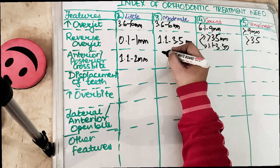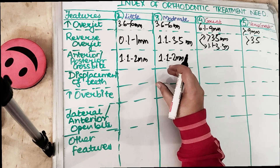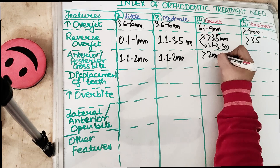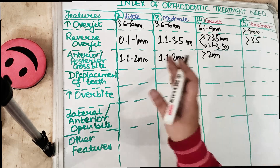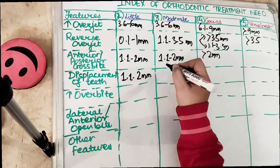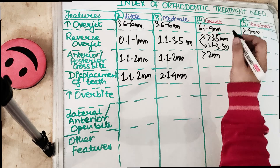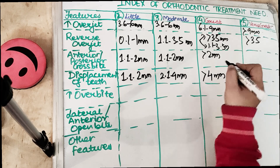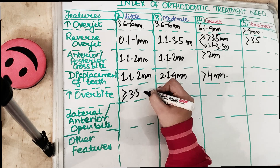For anterior or posterior crossbite: Grade 2 is 1.1 to 2 millimeters; Grade 3 is also 1.1 to 2 millimeters but between the retruded contact position and intercuspal position; Grade 4 is more than 2 millimeters, and also includes a posterior lingual crossbite with no functional occlusal contacts. For displacement of teeth: Grade 2 is 1.1 to 2 millimeters; Grade 3 is 2.1 to 4 millimeters; Grade 4 is severe displacement greater than 4 millimeters.